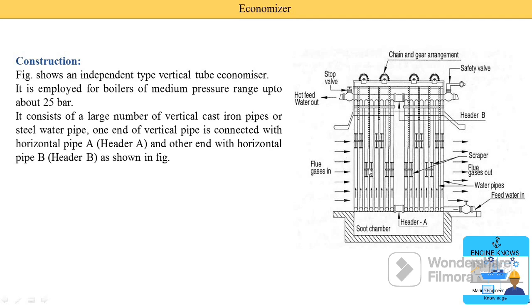There are a number of scrapers installed. These scrapers are used to remove the soot deposits. To operate the scrapers up and down, a chain and gear arrangement is provided. Due to this chain and gear arrangement, the scrapers move up and down, and the soot that sticks on the pipes is collected in the lower part, known as the soot chamber. The flue gases enter from one side and exit from the other side.